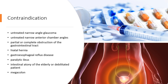It is also contraindicated in paralytic ileus, intestinal atony of the elderly or debilitated patient, megacolon, toxic megacolon complicating ulcerative colitis, severe colitis, and myasthenia gravis. It is contraindicated in patients with obstructive uropathy and in patients with unstable cardiovascular status in acute hemorrhage.